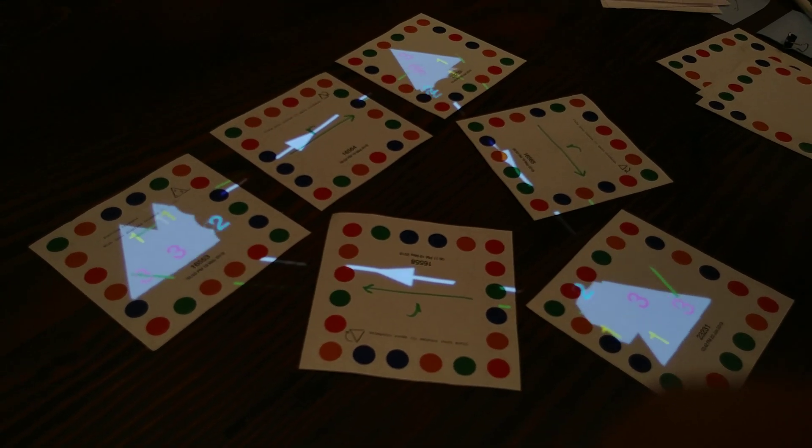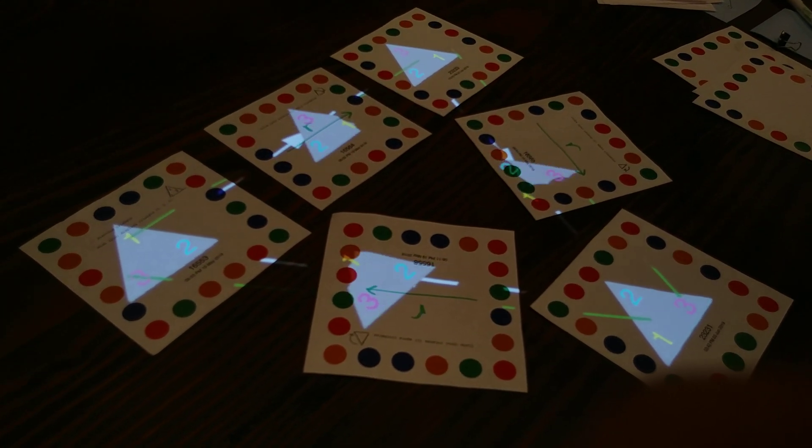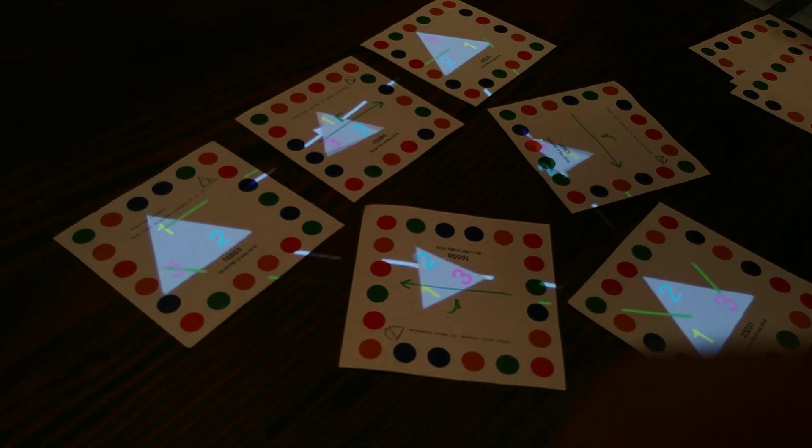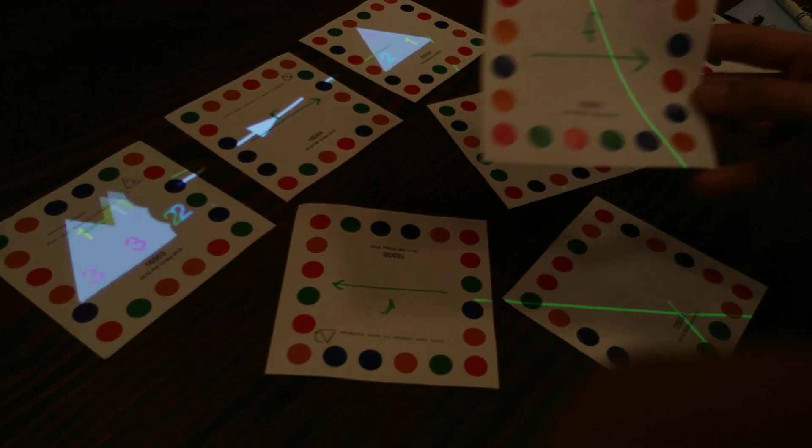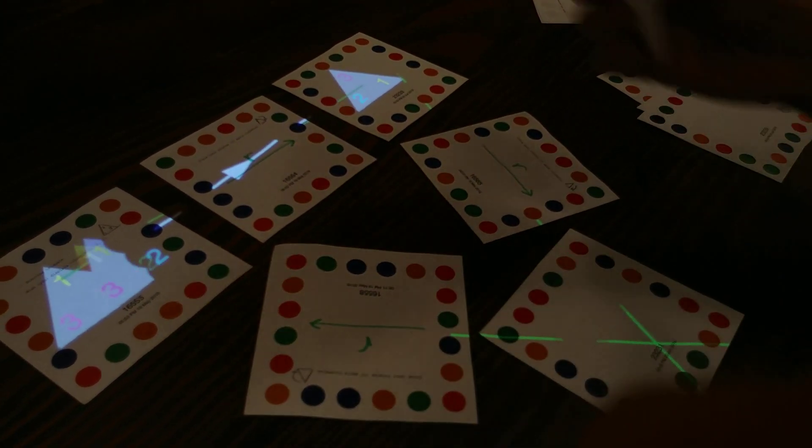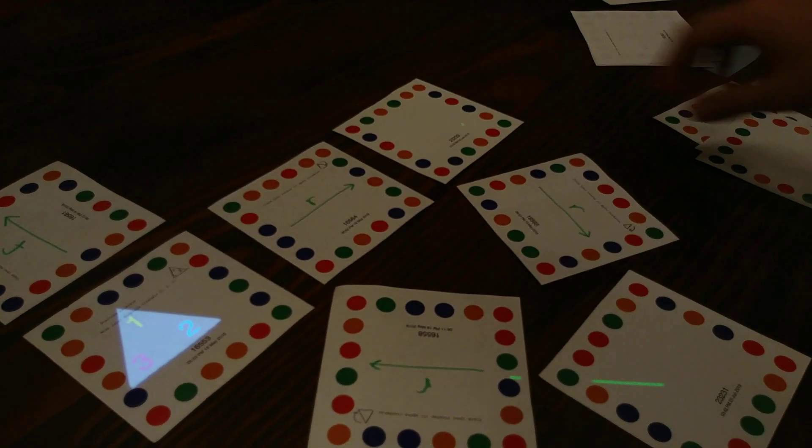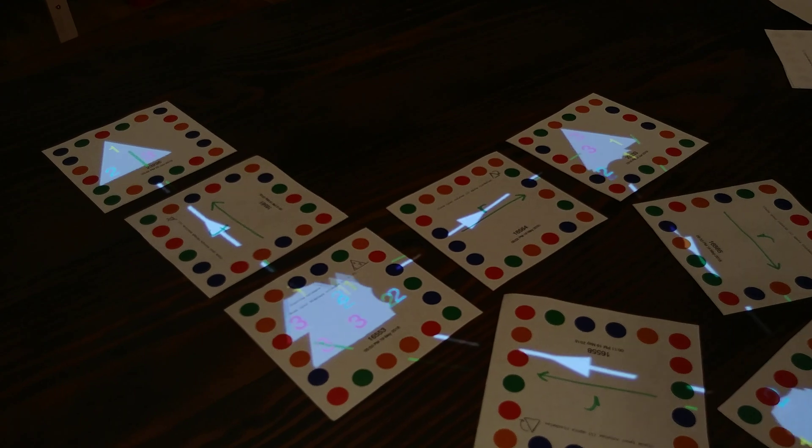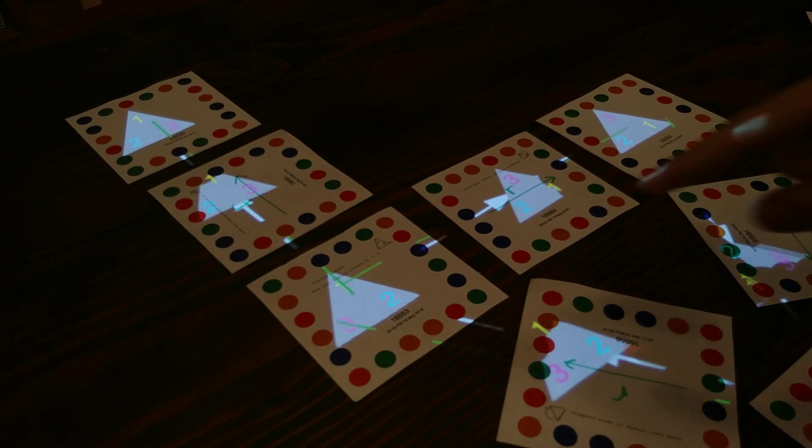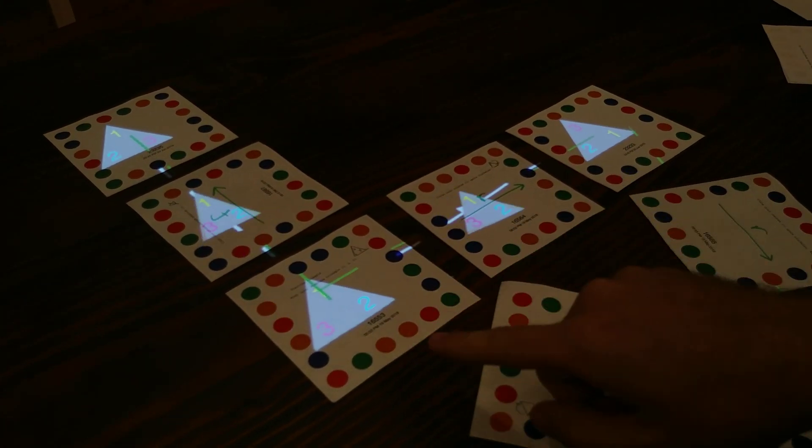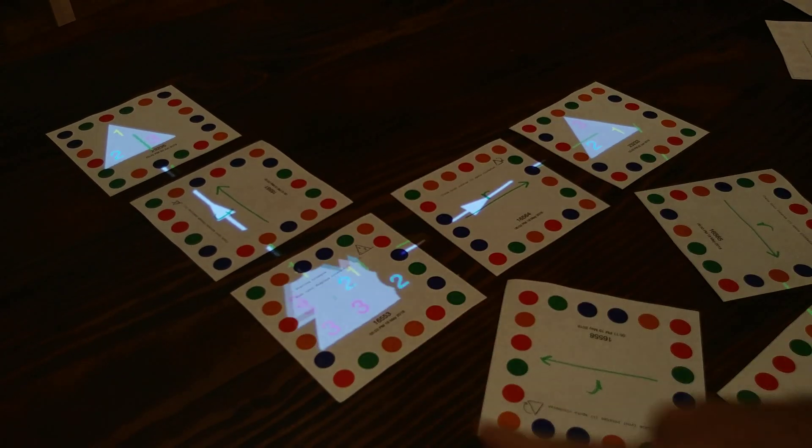But rotations aren't all that you can do to these triangles. You can also flip them over. So I've got some cards here that say F for flip. And I can do the same sort of thing where I put them down and give them a target. So now that's showing what it means to take this triangle and flip it, which in this case means that the two and the three are going to swap.